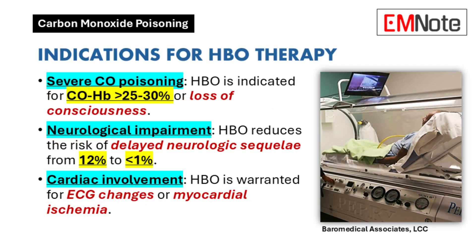Indications for HBO Therapy — Severe Carbon Monoxide Poisoning: HBO therapy is indicated for patients with severe carbon monoxide poisoning, particularly those with carboxyhemoglobin levels greater than 25 to 30%, as this indicates significant exposure and potential for serious complications. Patients exhibiting loss of consciousness or neurological impairment should also receive HBO therapy. It has been shown to reduce the incidence of delayed neurologic complications from approximately 12% to less than 1%.